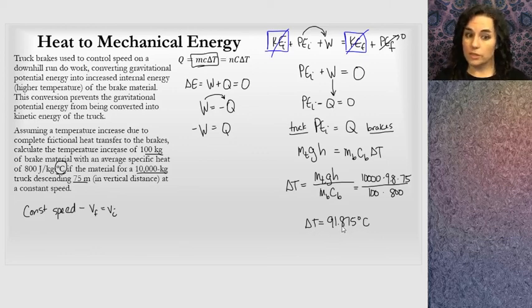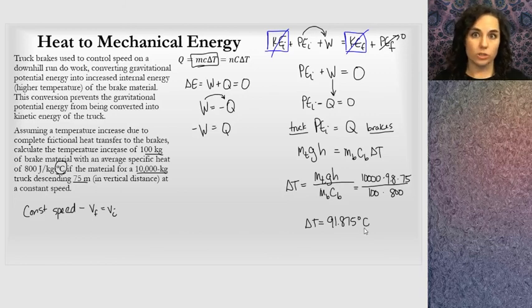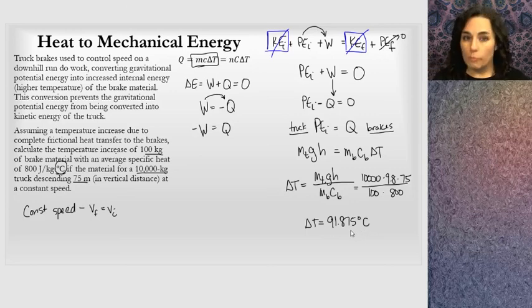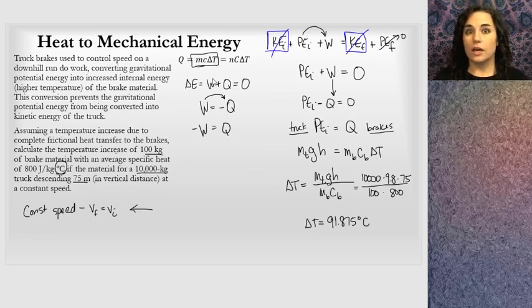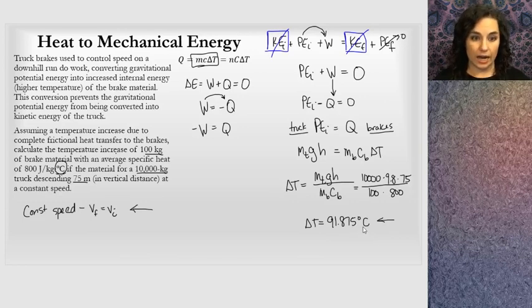The brakes heat up by about 92 degrees Celsius. Starting from roughly 20 degrees ambient temperature, that brings them above 100 degrees. Brakes have a higher melting point than water, so they won't melt, but they may start smoking. This explains why brakes smoke — they're absorbing all of the mechanical energy as heat, which is what degrades brake material over time. Those are a few examples of how to do temperature change calculations with specific heat.